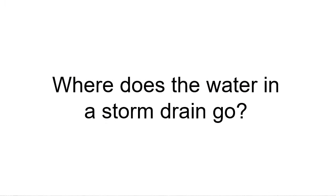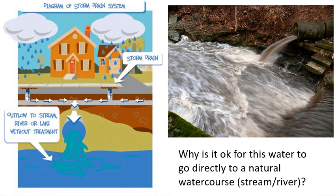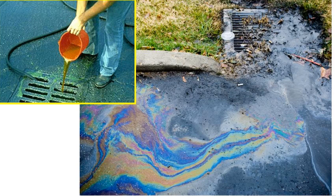Water from storm drains goes right back into the river, and that's okay because it's precipitation that would normally flow there anyway. Many storm drains have signs warning not to pollute, because the water goes straight to the Chattahoochee River. Whatever gets washed in with the water ends up in the river, so you should be careful about trash — and you should never pour old oil or chemicals into a storm drain.